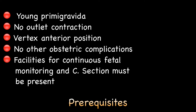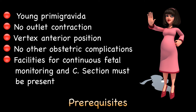Prerequisites for trial of labor are: young primigravida, no outlet contraction, vertex anterior position, no other obstetric complications, and availability of facilities for continuous fetal monitoring and caesarean section.